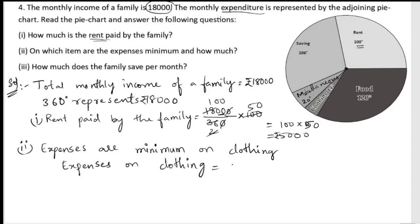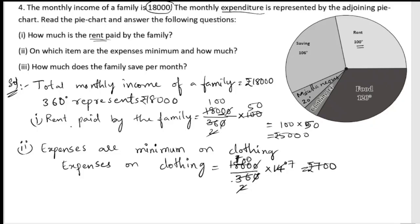To find the expense on clothing, we do the same calculation: (18,000 ÷ 360) × 14. After cancelling the zeros, 18 divided by 2 gives 9, and 9 × 7 = 63... so 7 × 100 = 700. The amount spent on clothing is ₹700.